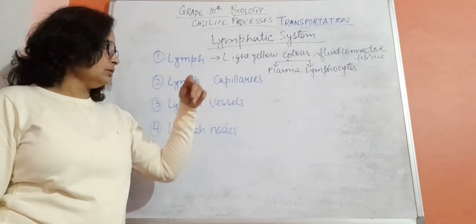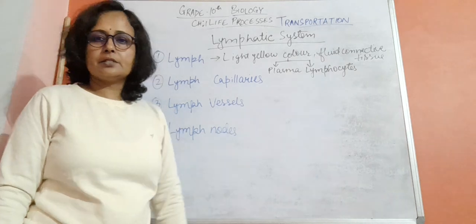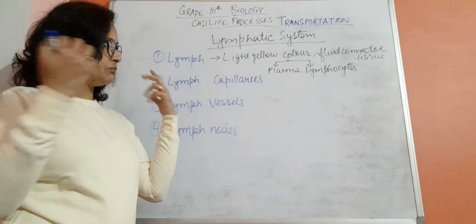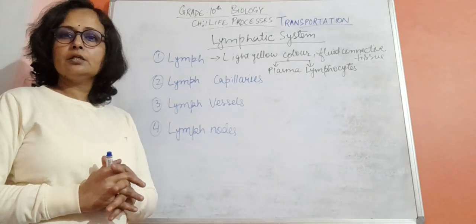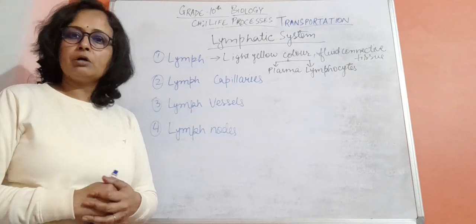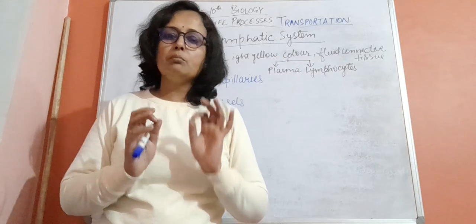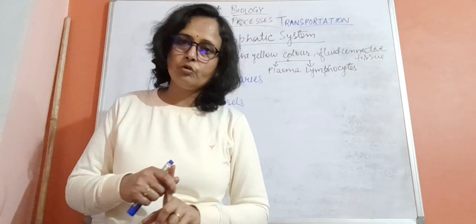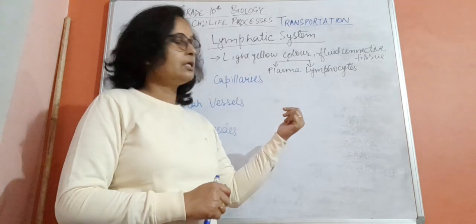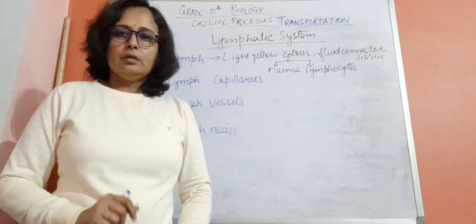Foreign materials are killed by antibodies produced by the lymphocytes. This is very important for our immunity. The lymphatic system works like leukocytes, which are WBCs, and is important for the body's immune defense.